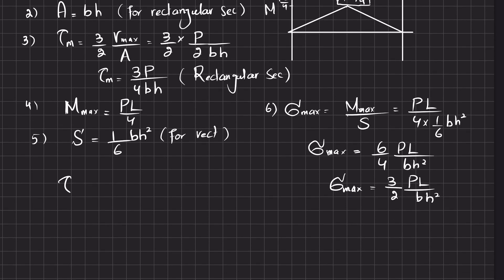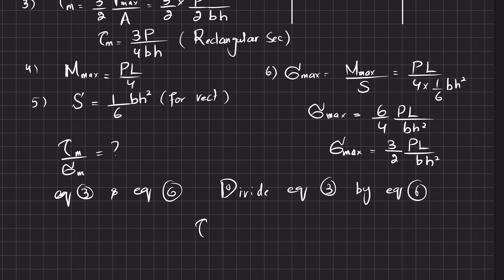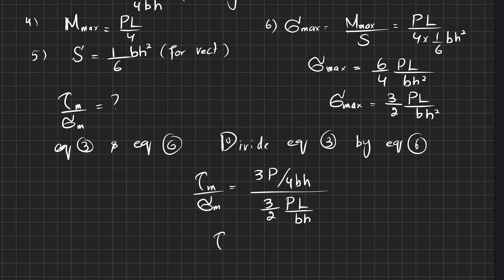We are asked to find the ratio of maximum shear stress over maximum bending stress. Dividing equation 3 by equation 6: τ_M / σ_M = [3P/(4BH)] / [3PL/(2BH²)]. After cancellation of P, 3, B, and one factor of H, we get τ_M / σ_M = H / (2L).